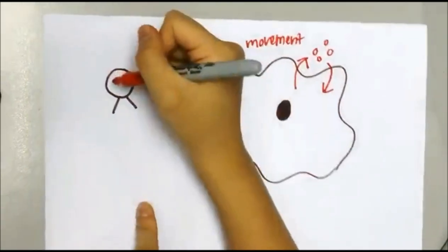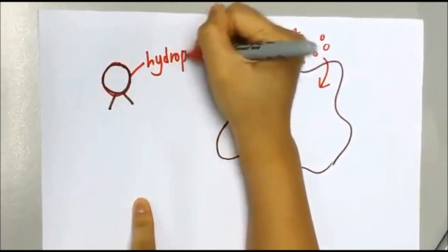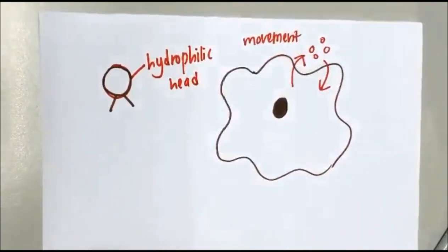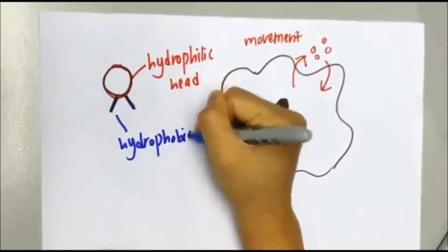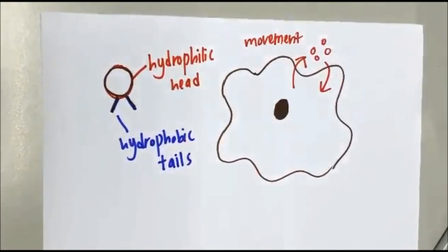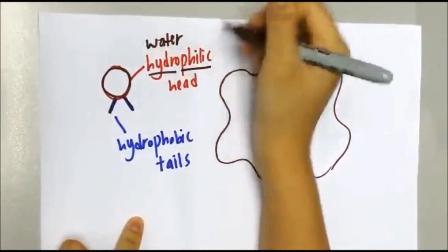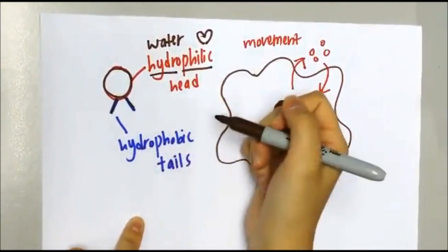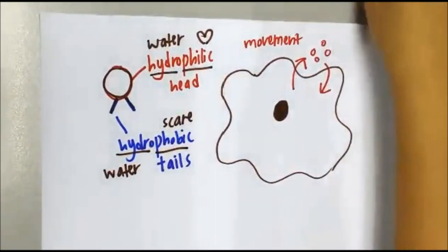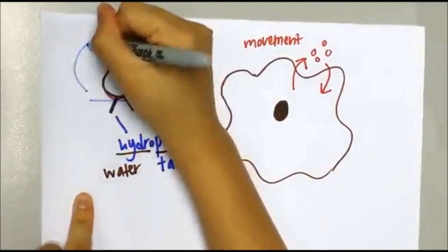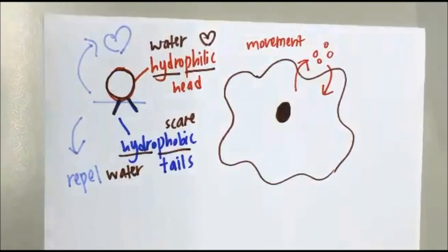Each phospholipid consists of one hydrophilic head and two hydrophobic tails. Hydro means water, philic means attract, and phobic means repel. So the hydrophilic region attracts water while the hydrophobic region repels water.